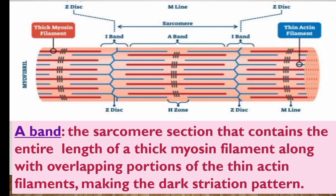The A-band is the sarcomere section that contains the entire length of the thick myosin filament along with the overlapping portion of the thin actin filament, making the darkest striation pattern. The dark part is the A-band and the light part is the I-band.